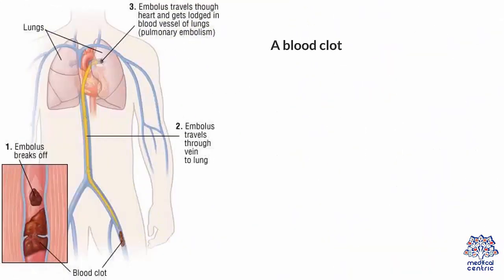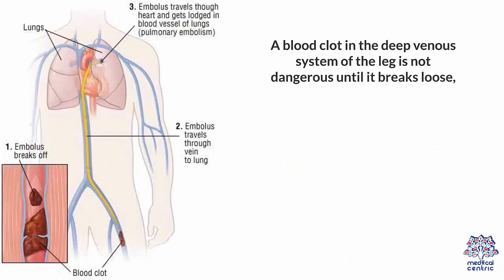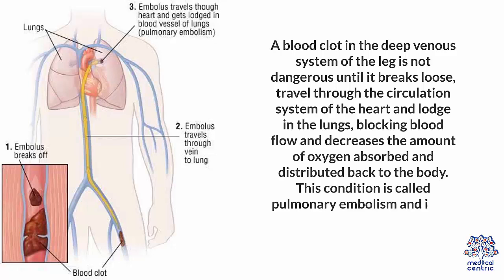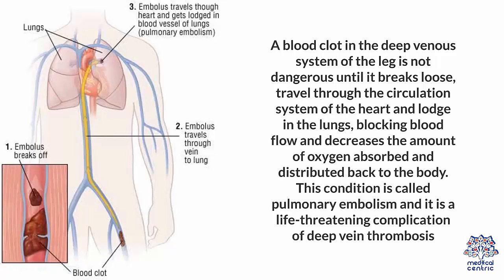A blood clot in the deep venous system of the leg is not dangerous until it breaks loose, travels through the circulation system of the heart, and lodges in the lungs, blocking blood flow and decreasing the amount of oxygen absorbed and distributed back to the body. This condition is called pulmonary embolism and it is a life-threatening complication of deep vein thrombosis.